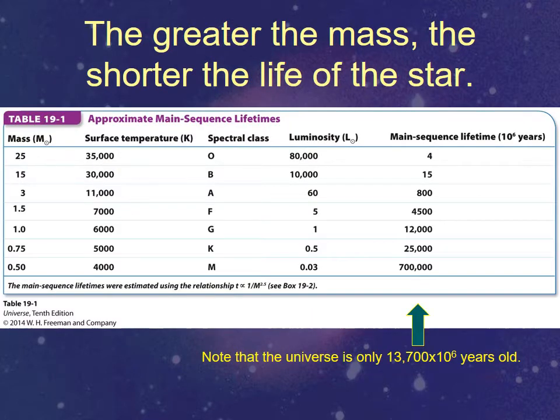So here's a little chart from the book that shows that stars that are very high mass, 25 solar mass stars, that are about 80,000 times brighter than the Sun. There's L with a little circle and dot in it. That means luminosity of the Sun. So these are about 80,000 times brighter, and they only live on the main sequence about 4 million years. That's nothing compared to the life of other stars.